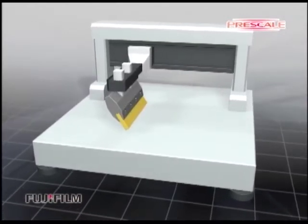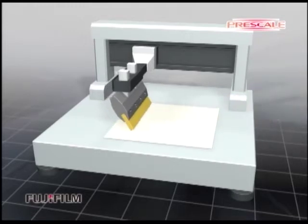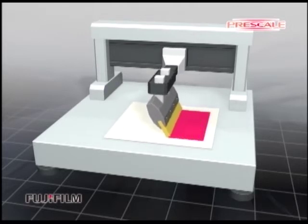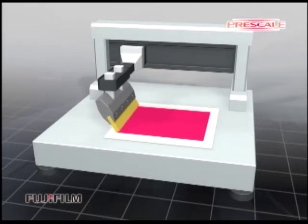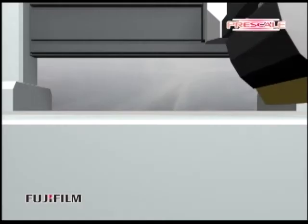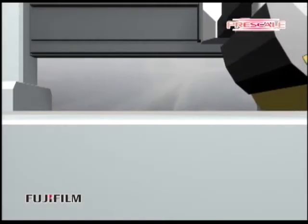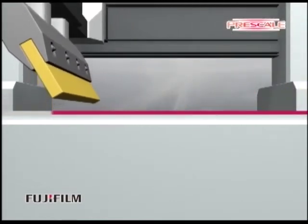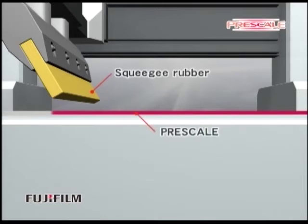The next application is a measurement of the pressure from a squeegee on the screen mask. Set the prescale on the screen mask and bring the squeegee rubber into contact with its surface. Run the squeegee rubber along the surface without losing contact at a constant speed to check the pressure balance.